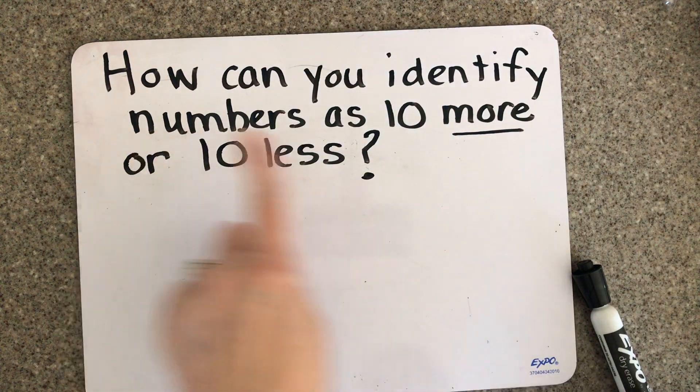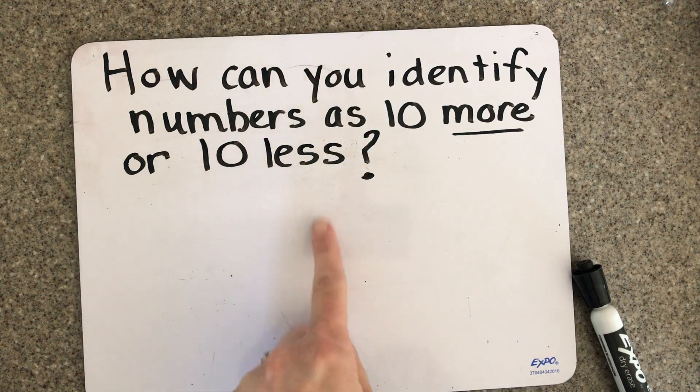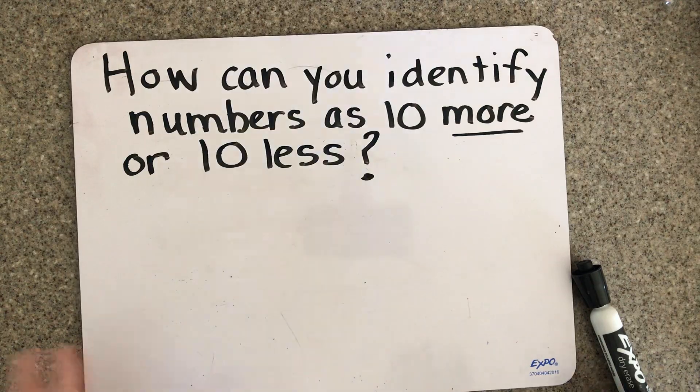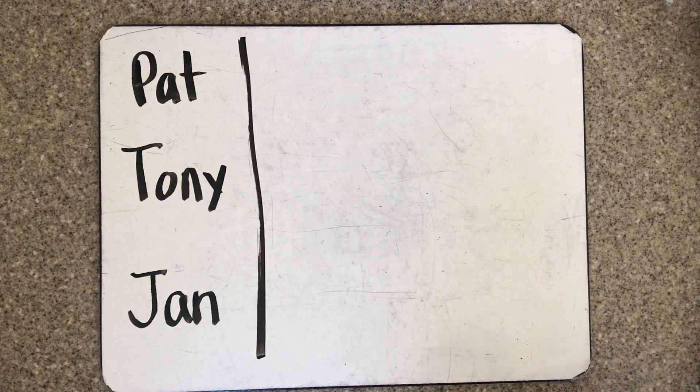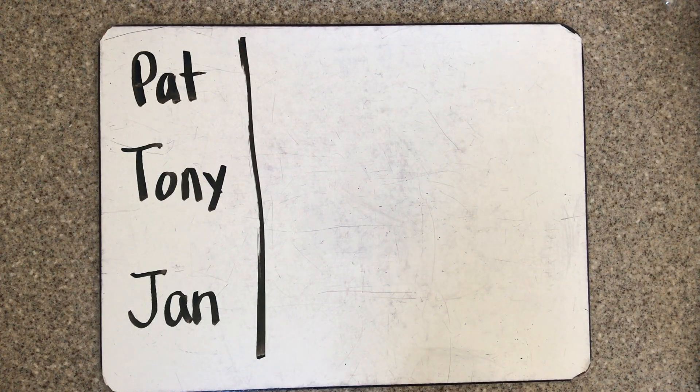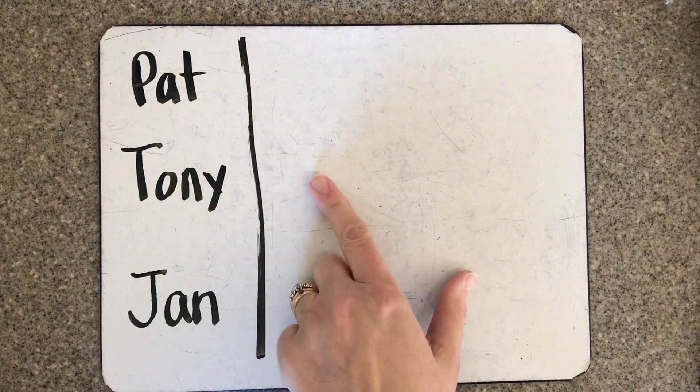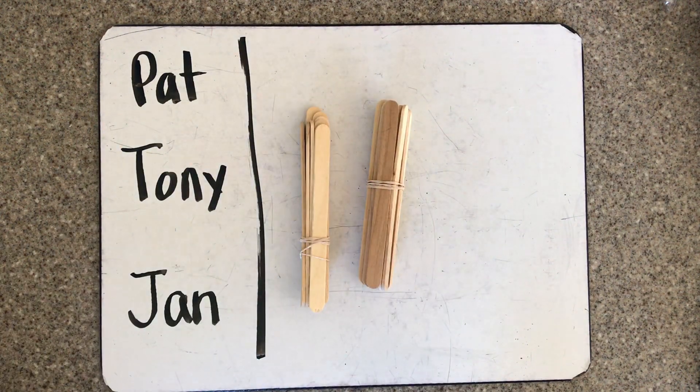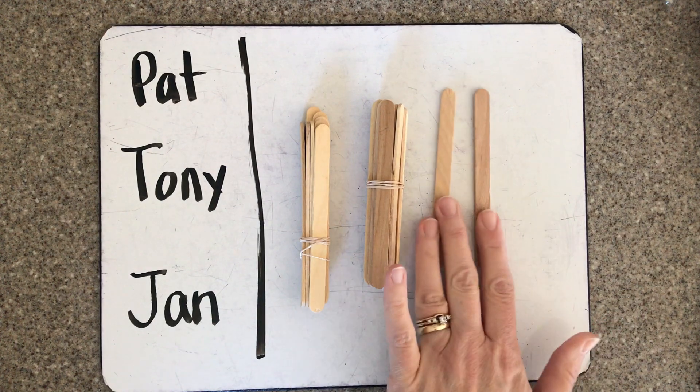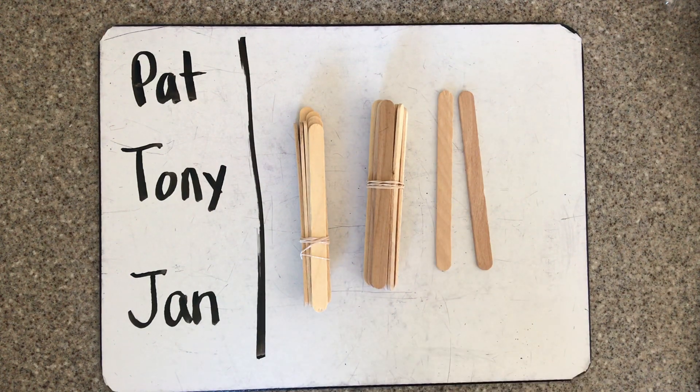We're going to do some work today with identifying the numbers as 10 more or 10 less. We're going to start with a story problem with three friends: Pat, Tony, and Jan. In the story, Tony has two boxes of markers and then two more. We can assume that the box of markers has 10 in a box, so if he has two boxes of 10 and then two more, what number are you thinking right now? Did you say 22? He has 22 markers in all.